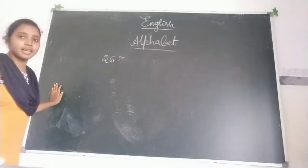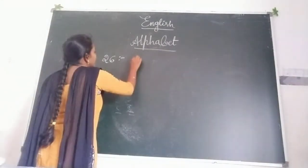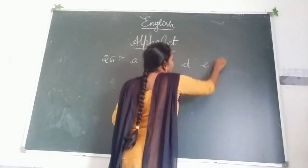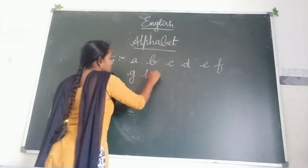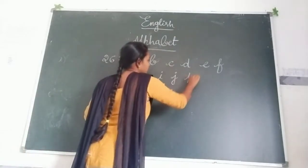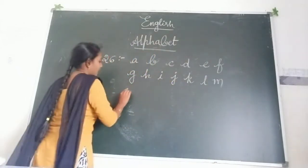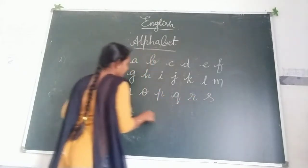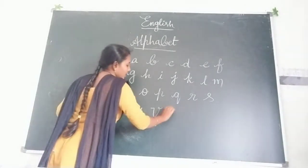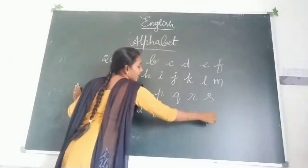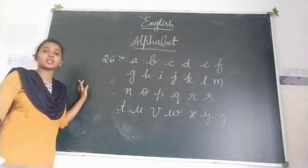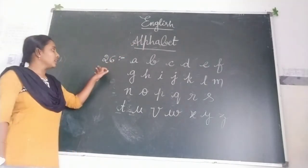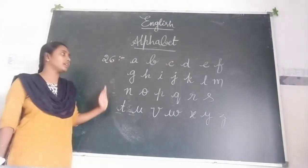Now you know 26 alphabets. We are writing them now: A, B, C, D, E, F, G, H, I, J, K, L, M, N, O, P, Q, R, S, T, U, V, W, X, Y, Z. Okay children, these are the 26 alphabets. In the first line keep half of them, and in the next line keep the remaining 26 letters. Write these out children.